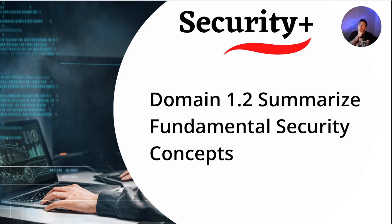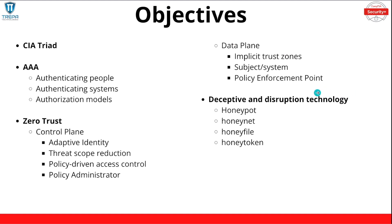We're going over Domain 1.2, summarizing fundamental security concepts. The objectives we're going to hit in this video are the CIA triad, which is the fundamentals of anything cybersecurity — whether you're in a 100-level college course or actually implementing cybersecurity solutions. Then we're going to go over AAA: authenticating people, authenticating systems, and authorization models, defining each — authentication, authorization, accounting.